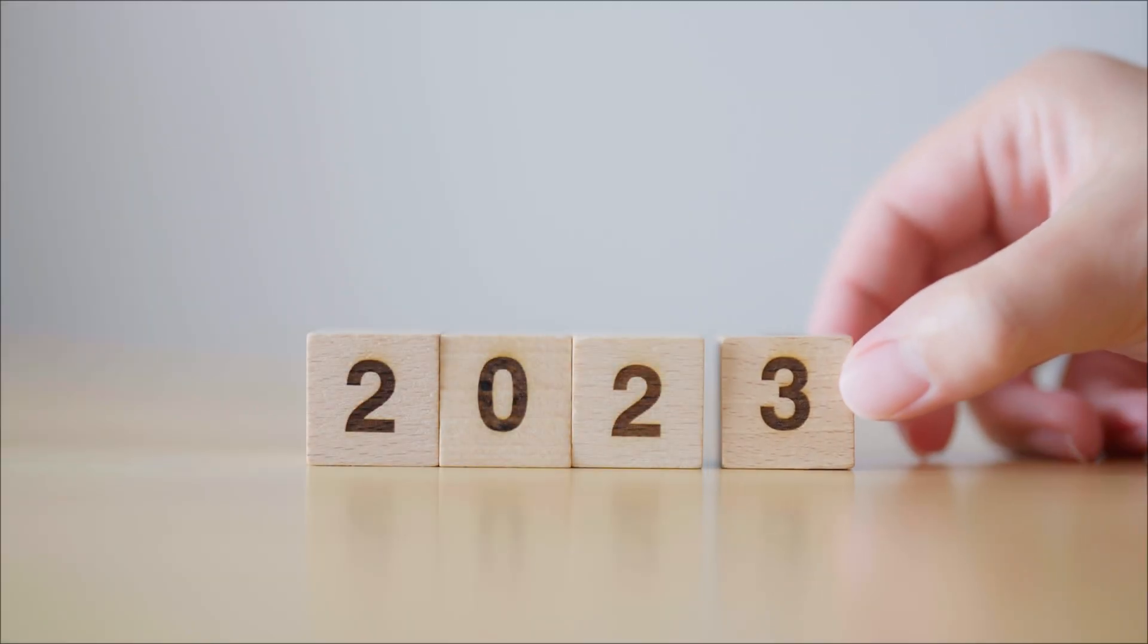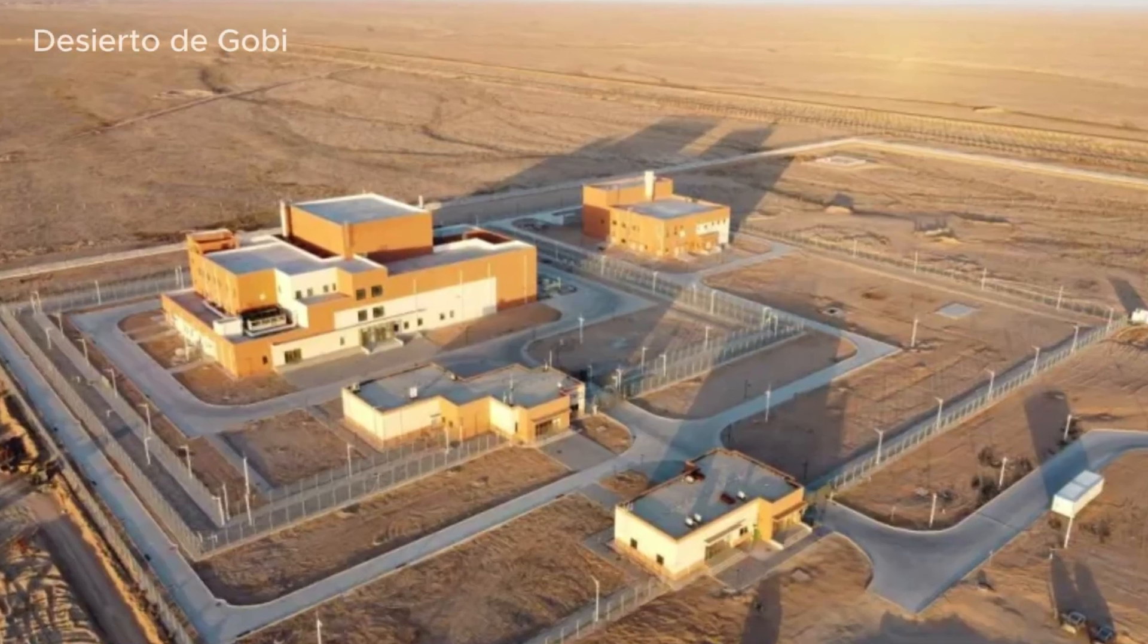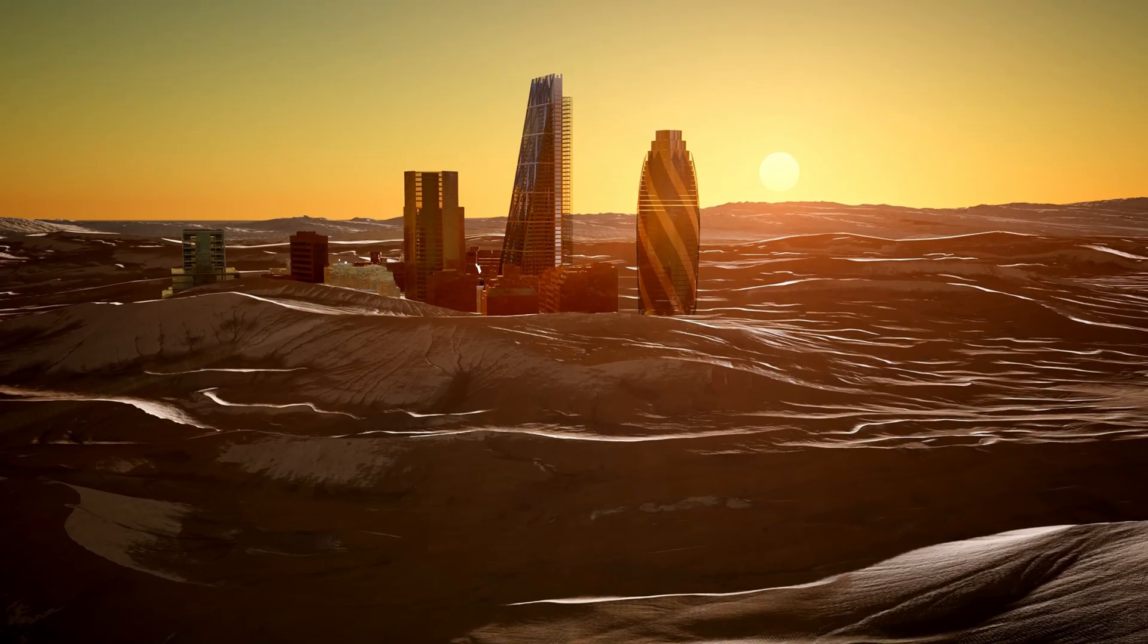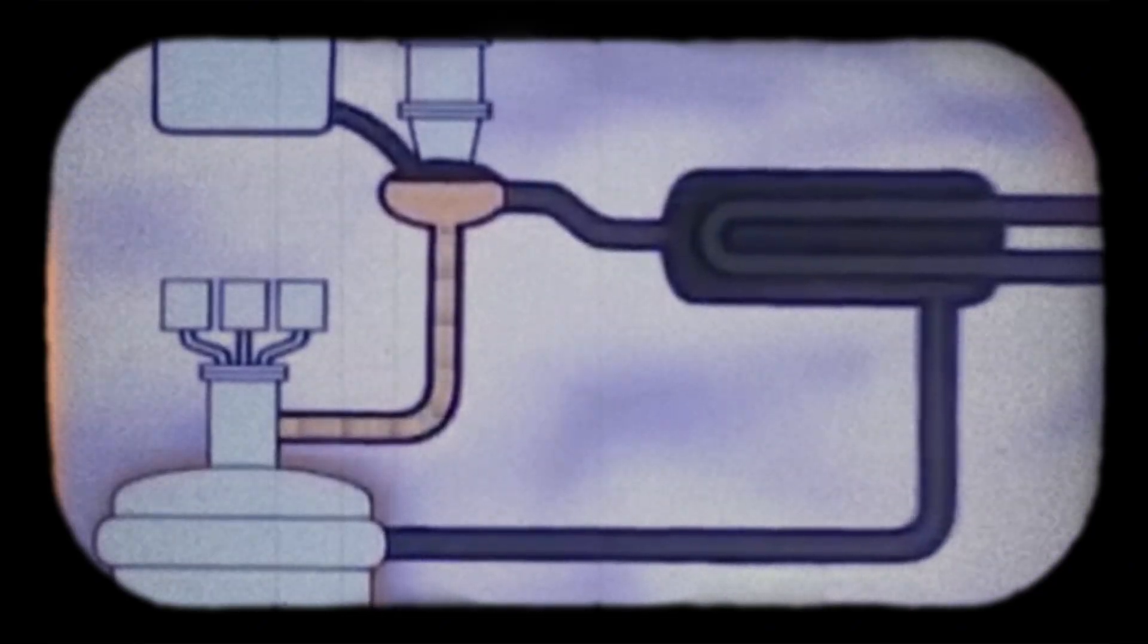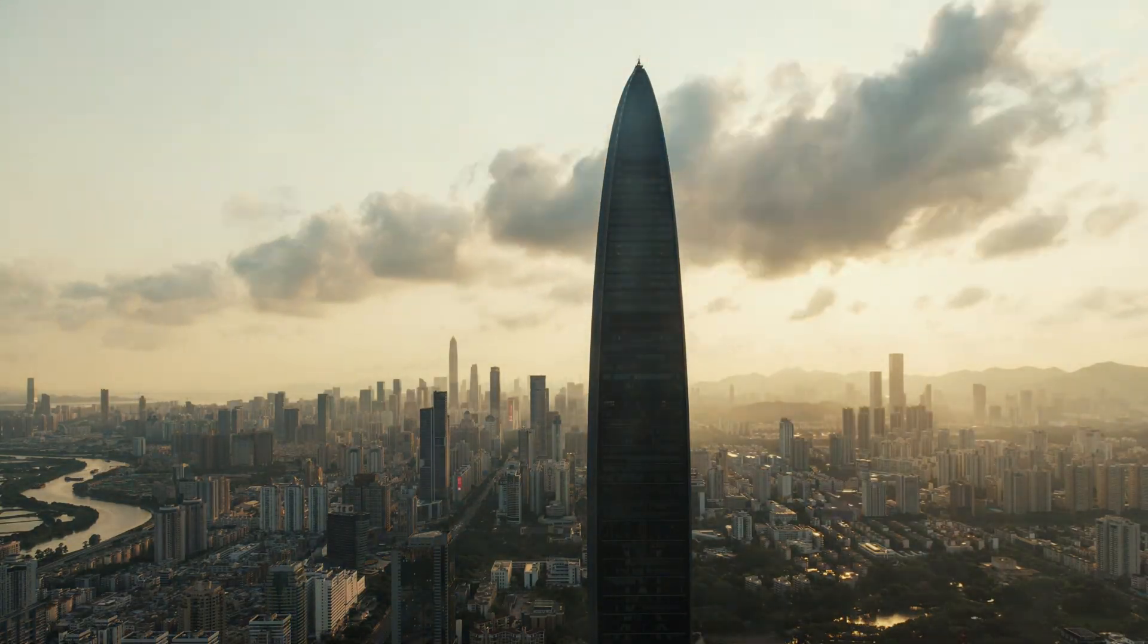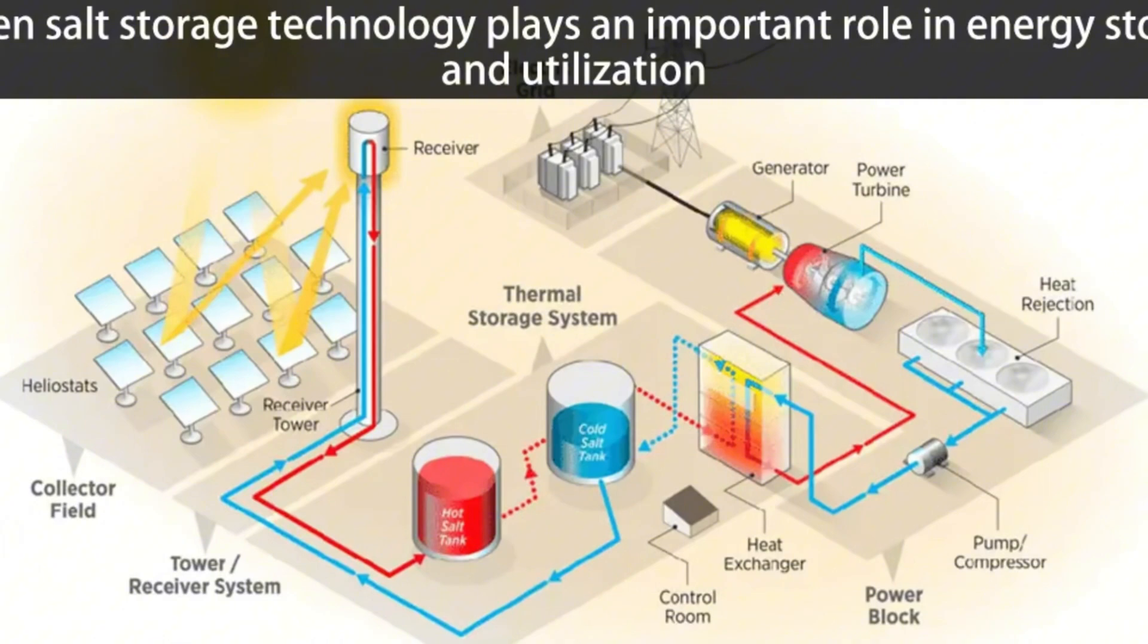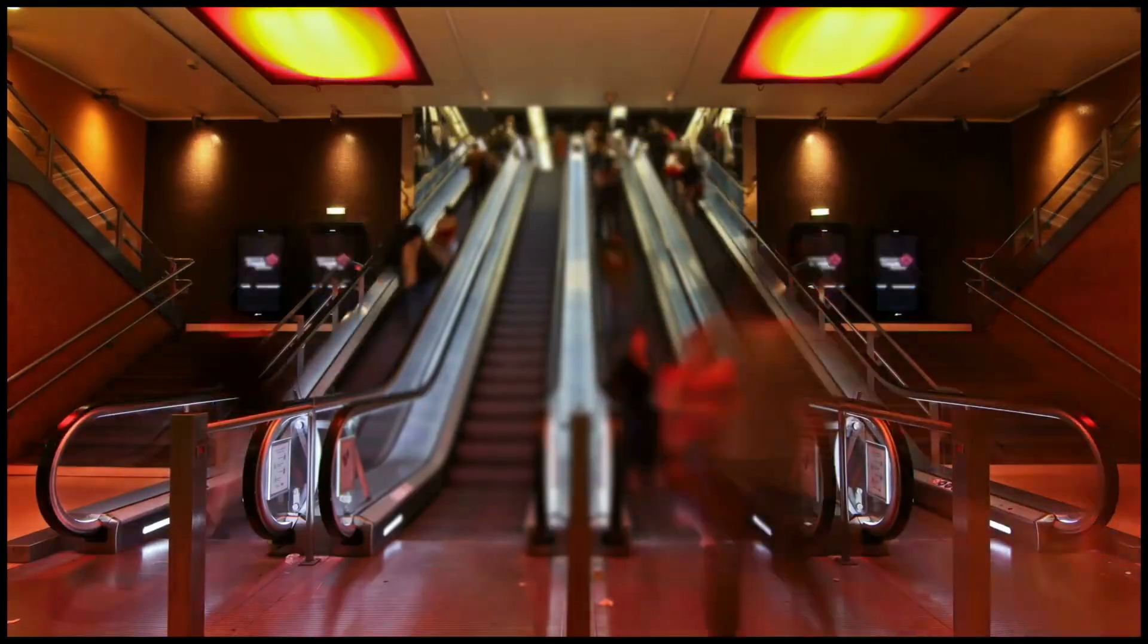In 2023, China achieved something that forever changed the global energy landscape. They launched the first commercial thorium molten salt reactor in the Gobi Desert. It was no coincidence that they chose the desert. These reactors don't need water for cooling, unlike traditional nuclear reactors. But here comes the most ironic part of this whole story. China built its reactor using declassified American research from the 1960s. They took the Oak Ridge plans, improved them with modern technology, and achieved in just a few years what the United States had abandoned decades earlier.